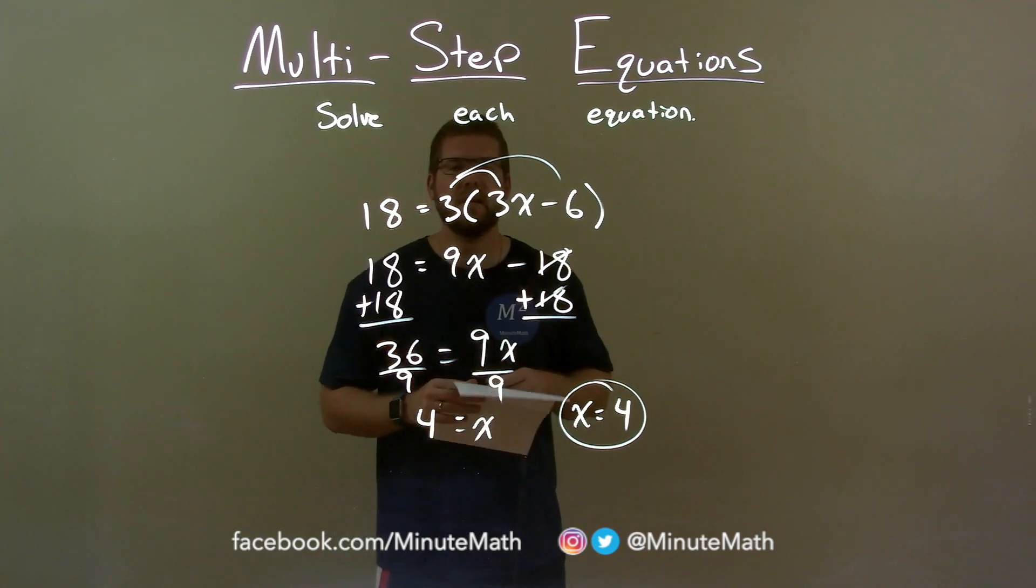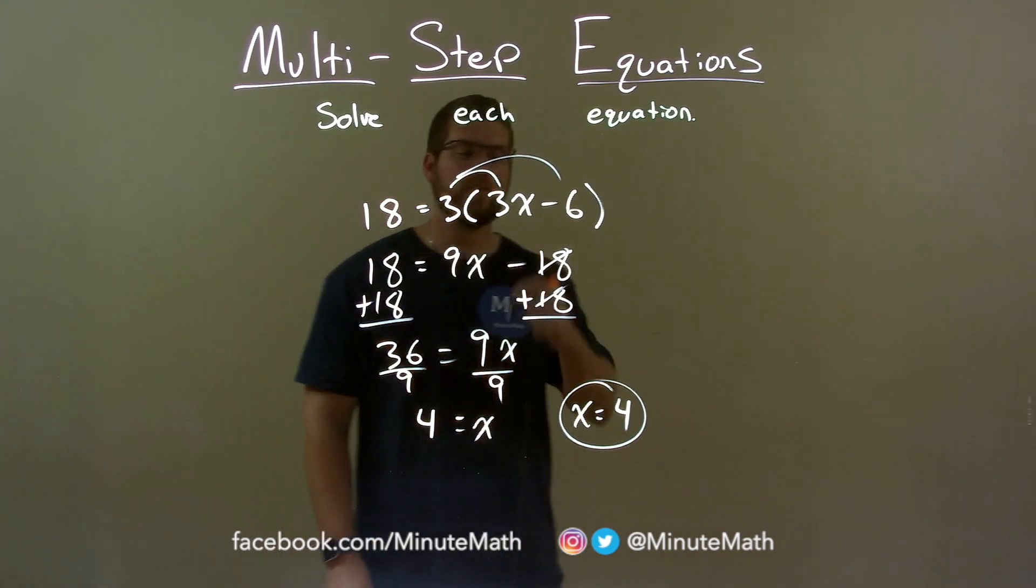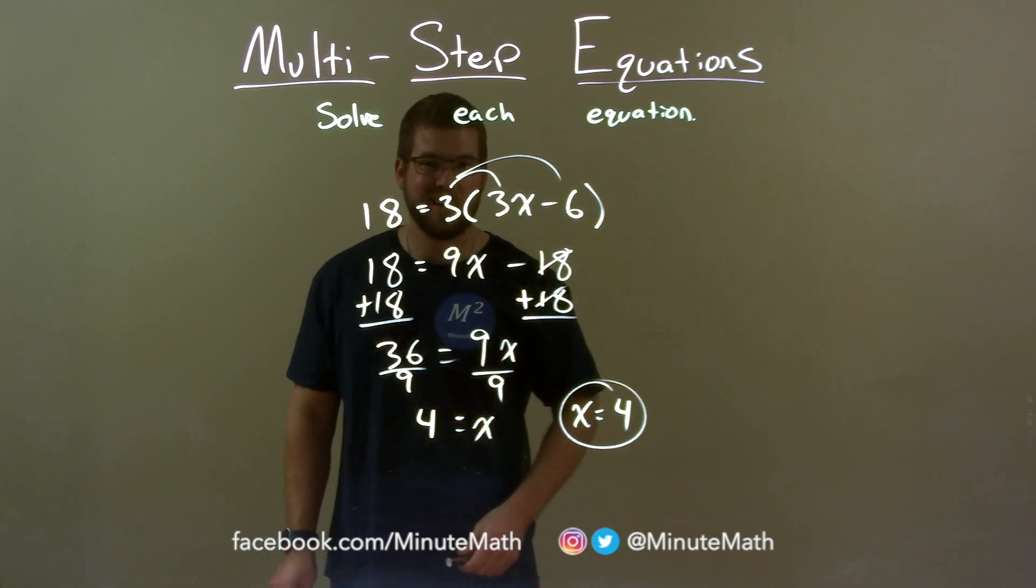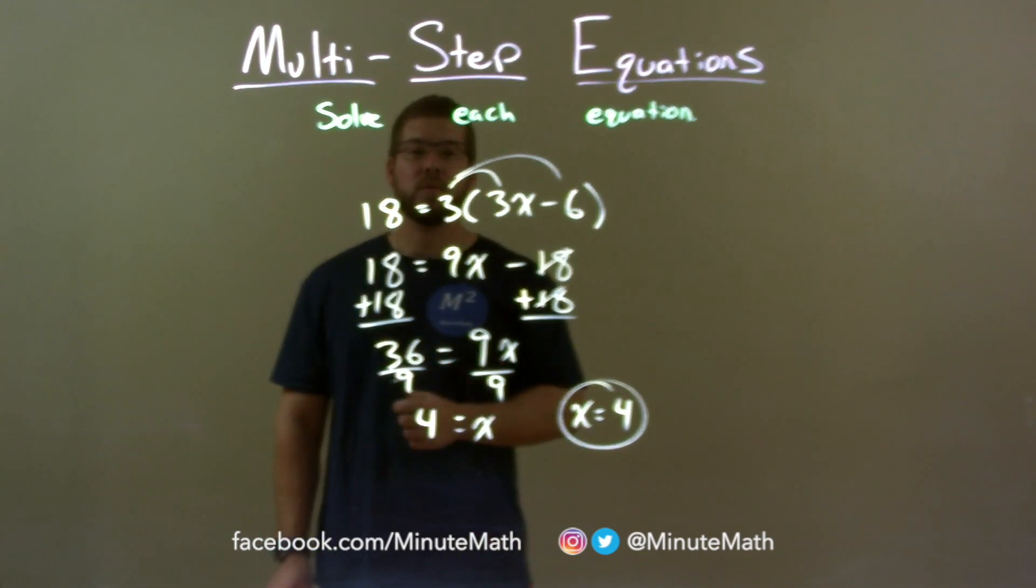Quick recap: we're given 18 equals 3 times (3x minus 6), and we have to solve for x. I distribute 3 across, then add 18 to both sides, divide both sides by 9 to get our final answer of x equals 4.